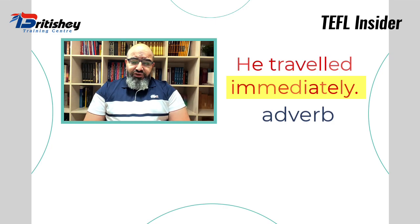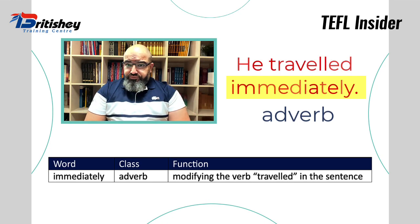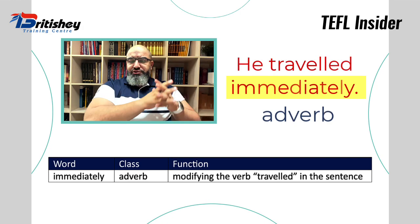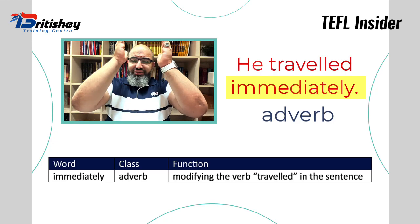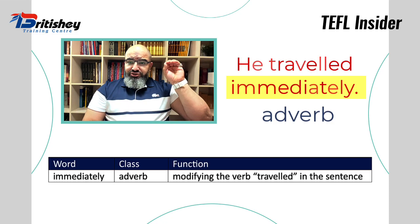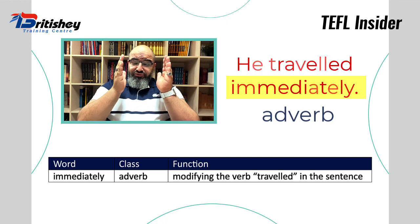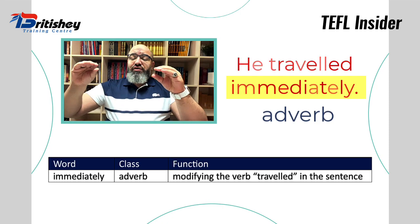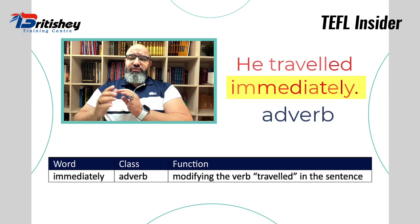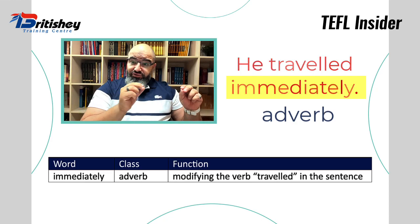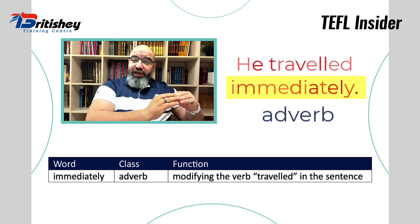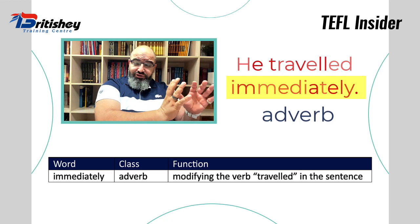Now, in order to do that, we advise you to draw a table. In this table, you will have a section where you write the word, then next to the word write the class or category, and next to that write the function. So you put 'immediately' under word, then write 'adverb' under class or category, and then in the function you write 'an adverb that modifies the verb traveled.' And that's all you need to do for part one — you do it with each italicized word in every sentence.